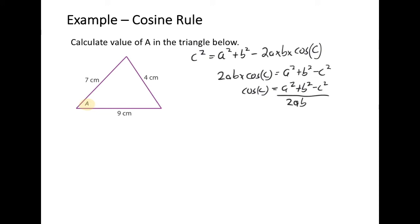Now I'll go back to my triangle in the example and label my information. My unknown angle a that I'm trying to find, I'll label as angle c. The side opposite angle c is side c, and my other two sides are side a and side b. Now that I've labelled all the sides and information in the triangle, I can substitute into my formula.